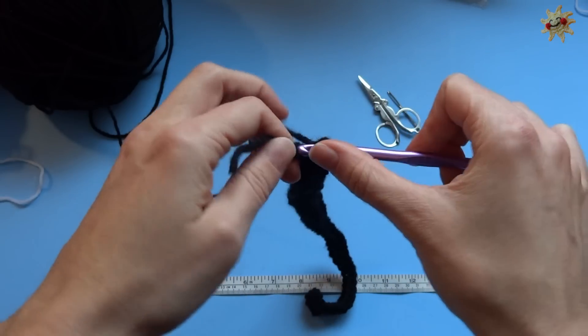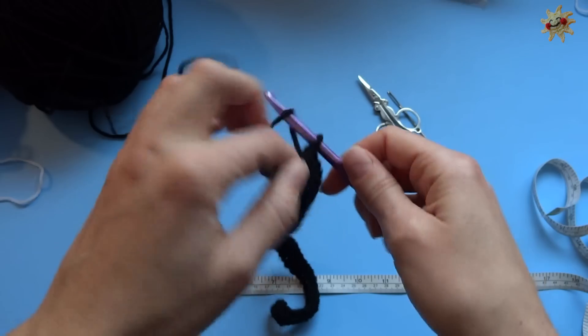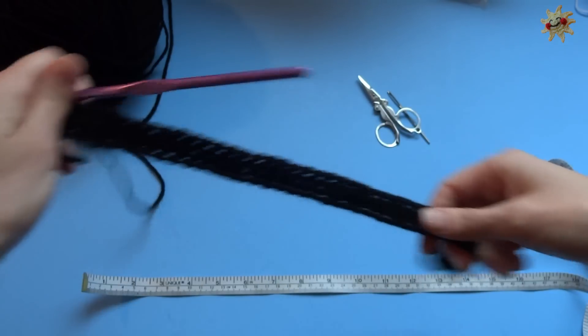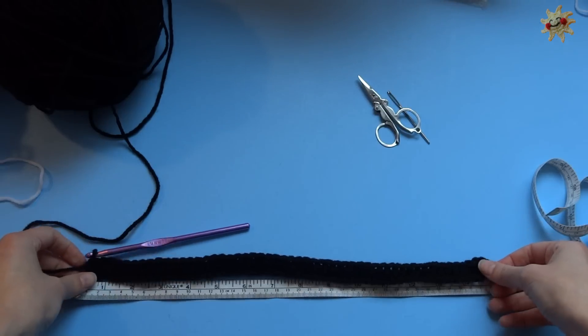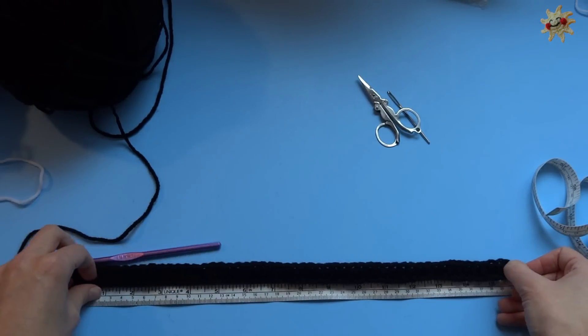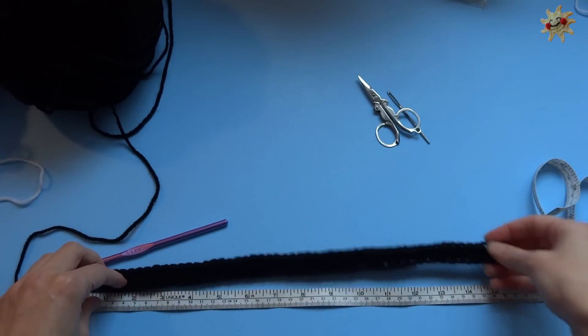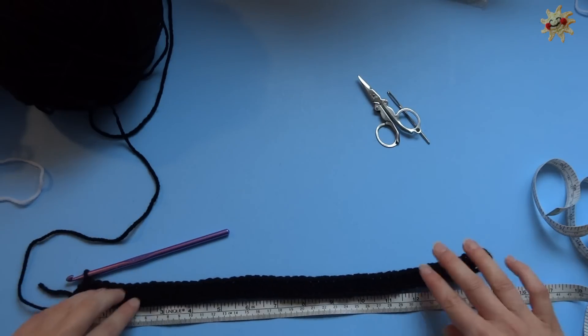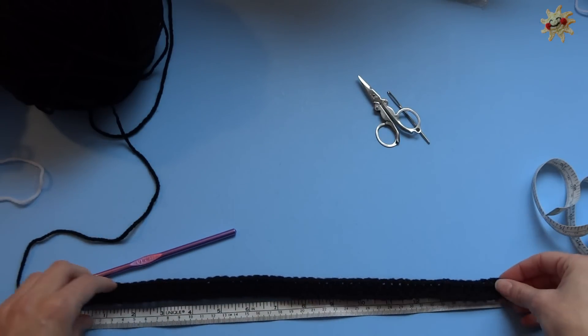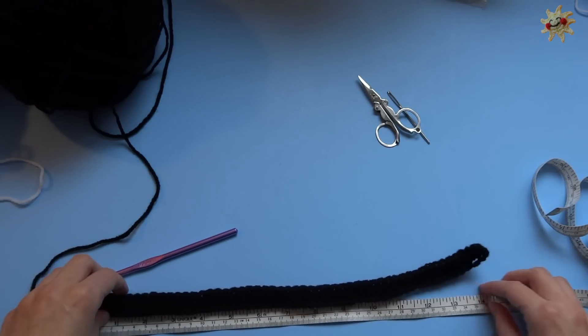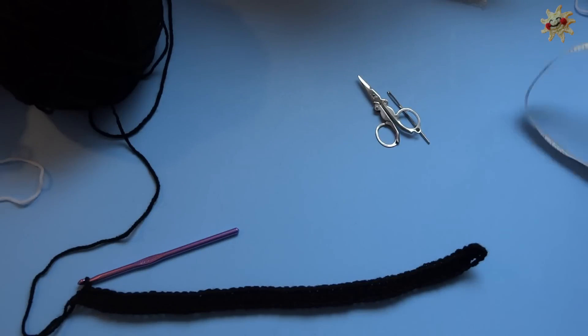And once you get to the end of your row, so I'm at the end, I've done the last one, just compare it against your measuring thing, and remember like it's going to stretch a little, so just compare it. And it should still be about 15 inches or however long you want it to be. And then you're done with your measuring tape.